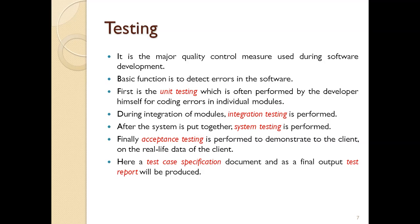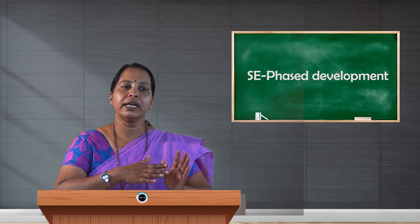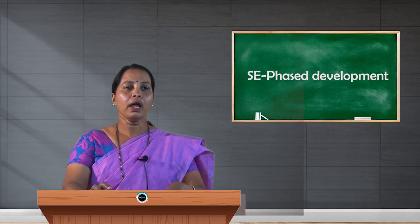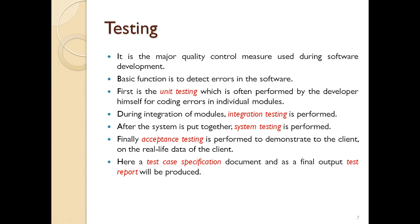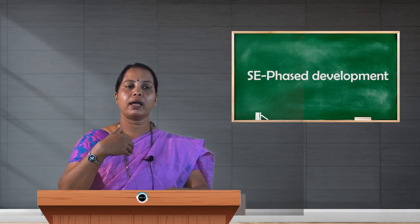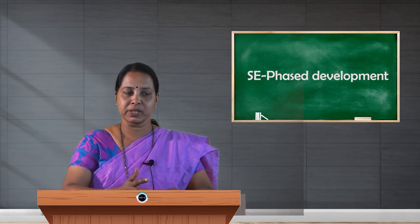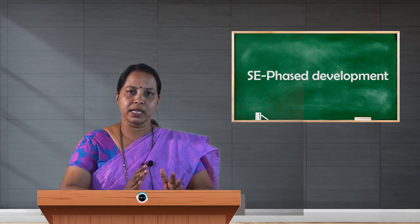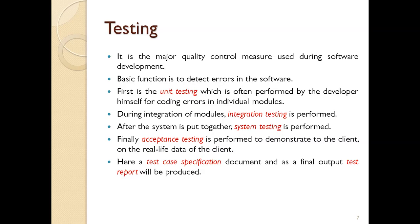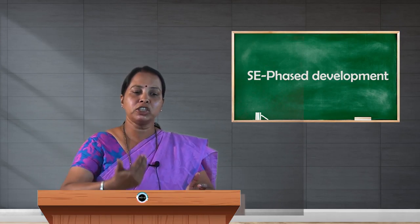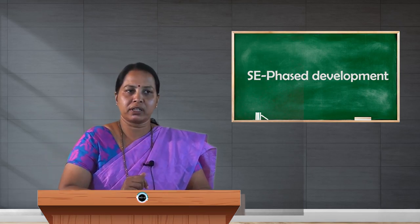Once unit testing is done and different modules are ready, they are integrated and integration testing is performed. After all modules are combined, system testing is performed. Finally, acceptance testing is performed to demonstrate the software to the client using real-life data. Proper test cases need to be specified. These four major phases in software development ensure quality and help maintain consistency in productivity.